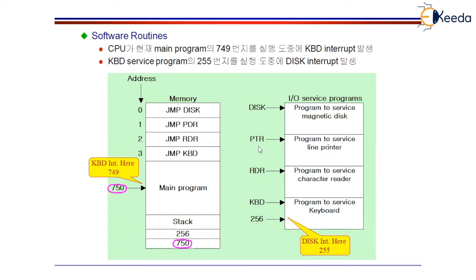Similarly, when the printer interrupts, the CPU should be able to execute 300 to 400. The printer's main memory location is 300 to 400, in which the printer service routine is available. The moment the printer interrupts, the CPU is going to execute all the instructions between 300 to 400, and the printer's request will be serviced — that is, you're going to get a printout. Every time a device interrupts the CPU, the CPU needs to execute that respective service routine which is loaded in the main memory.